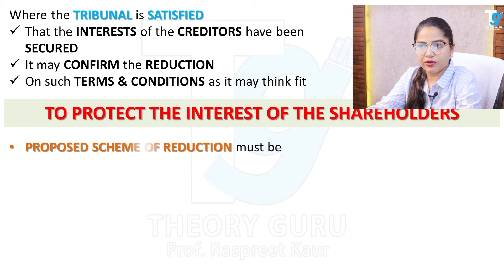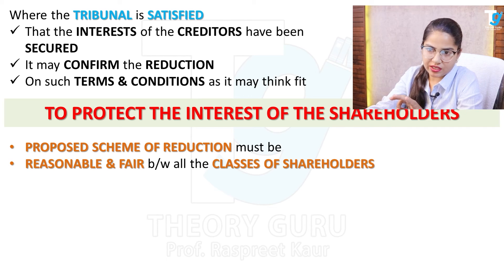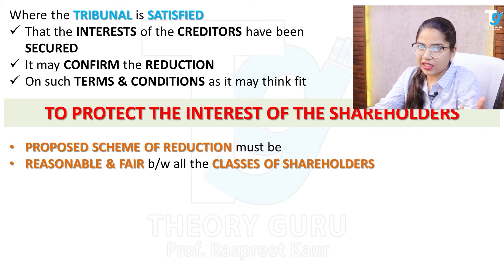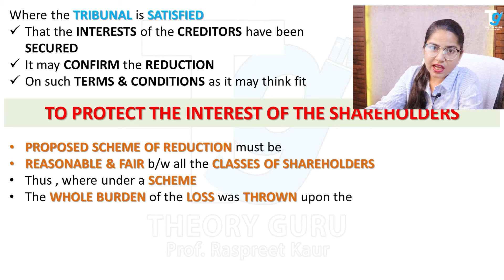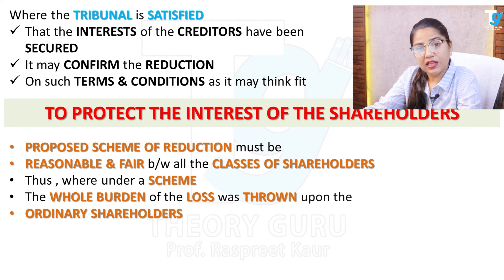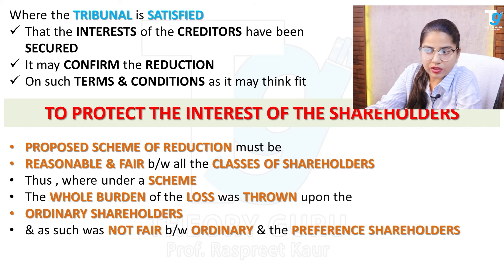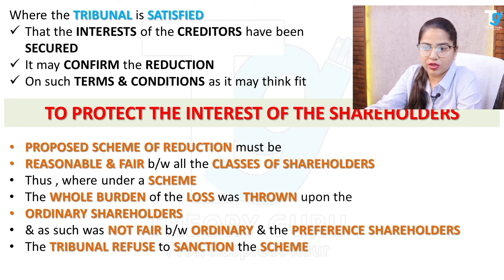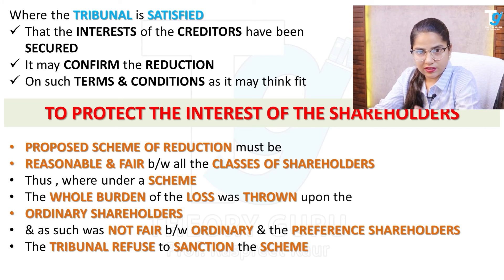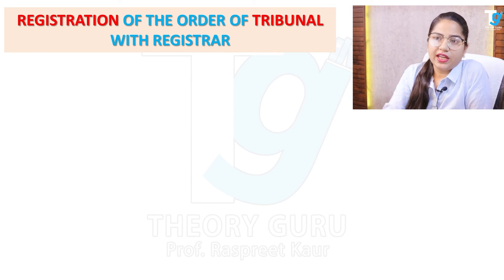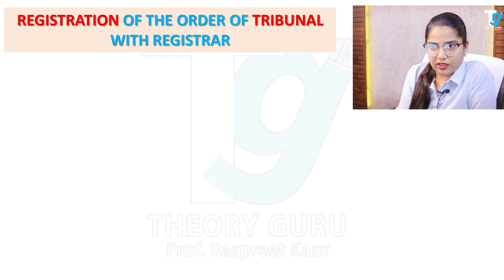Regarding the protection of shareholders: the scheme of reduction must be reasonable and fair between the different classes of shareholders. The burden should not fall entirely on one class — for example, if ordinary shareholders bear all the burden while preference shareholders are unaffected, the tribunal will not sanction it. Only if the reduction has an equivalent effect on all classes will the tribunal sanction the reduction.